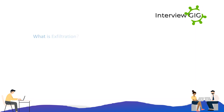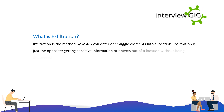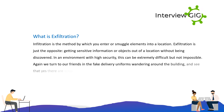What is exfiltration? Infiltration is the method by which you enter or smuggle elements into a location. Exfiltration is just the opposite — getting sensitive information or objects out of a location without being discovered. In an environment with high security, this can be extremely difficult but not impossible.